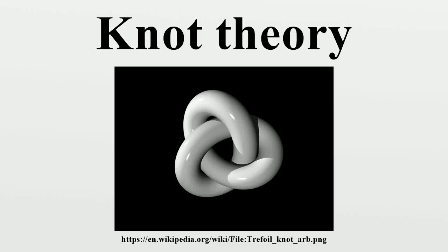In topology, knot theory is the study of mathematical knots. While inspired by knots which appear in daily life in shoelaces and rope, a mathematician's knot differs in that the ends are joined together so that it cannot be undone. In mathematical language, a knot is an embedding of a circle in three-dimensional Euclidean space, R3. Two mathematical knots are equivalent if one can be transformed into the other via a deformation of R3 upon itself. These transformations correspond to manipulations of a knotted string that do not involve cutting the string or passing the string through itself.